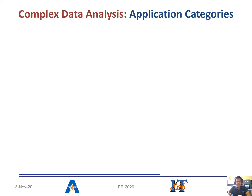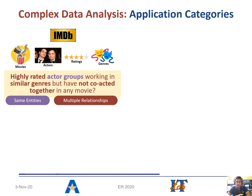For complex data analysis, we are focusing on three application categories. For example, in the case of IMDB, we want to find out the highly rated actor groups who work in similar genres but have never worked together in any movie. For this, we have to analyze the multiple relationships that exist among the same actor entities.